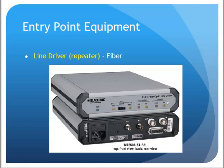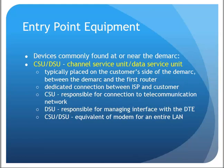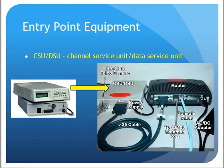We can also run into the CSU/DSU — Channel Service Unit / Data Service Unit. Think of it as a fancy WAN modem — a modem for the entire LAN. It's typically placed on the customer side of the demarc, between the demarc and the first router or firewall at that site. The CSU handles the connection to the telecommunications network, while the DSU maintains the interface with the DTE. An old-school CSU/DSU would look like a standalone T1 unit with serial cables connecting into a router.